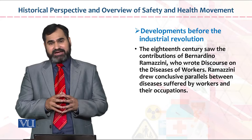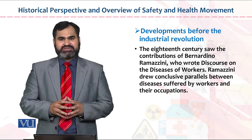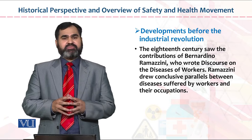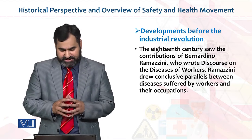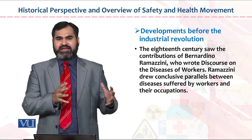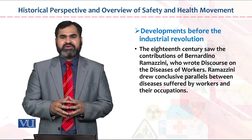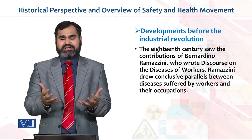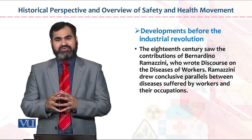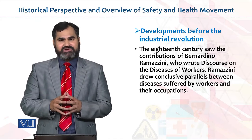After that, from the historical perspective, in the 18th century we saw the contributions of Bernardino. This is the historical perspective of how they discussed diseases of the worker. Razmino drew conclusive parallels between diseases suffered by workers and their occupations. For example, workers working in a furnace — where melting of iron is performed — are exposed to very high heat, which is not good for employees' health and body temperature. Definitely, workers and their occupations suffer due to this particular environment.